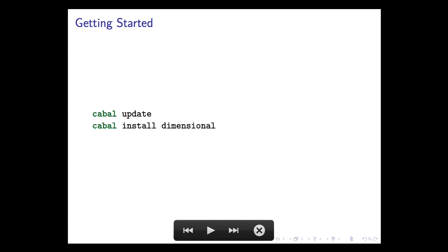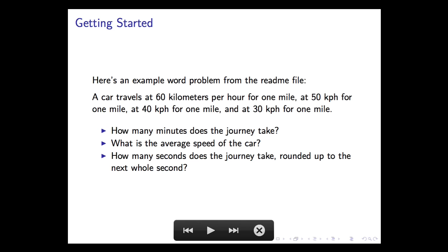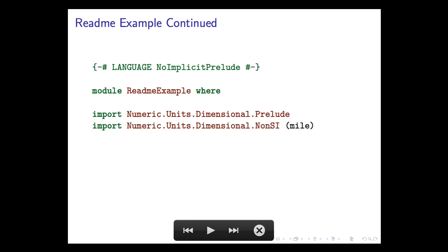So examples of how to use it. It's on Hackage now so you can just install it the ordinary way. And here's the example word problem that's in the README file. If the car travels at 60 kilometers an hour for one mile, then 50, then 40, and then 30, how many minutes did it take to go the four miles? What's the average speed of the car? And just to show getting it out of the dimensional universe, how many seconds does it take, round it up to the next whole second?